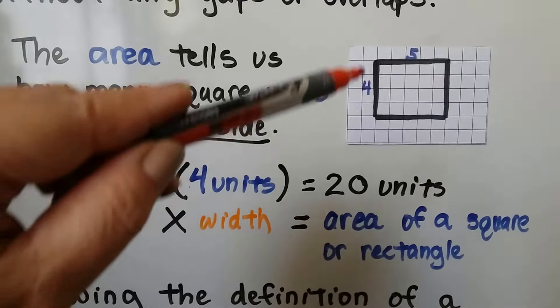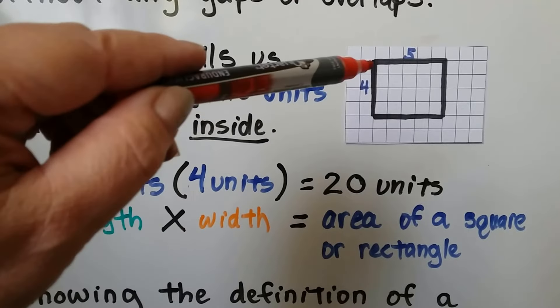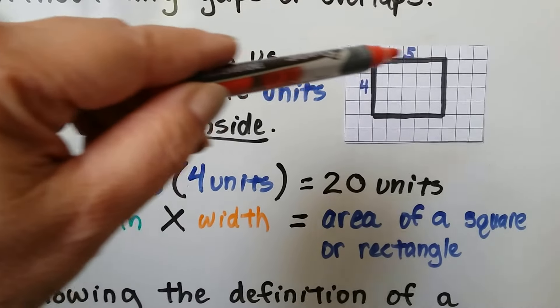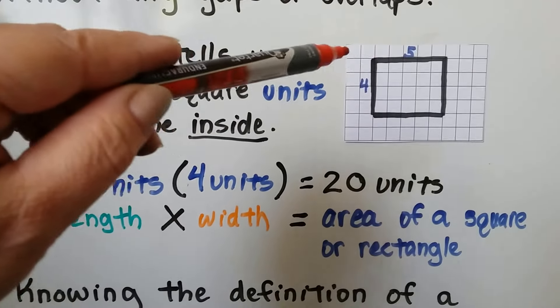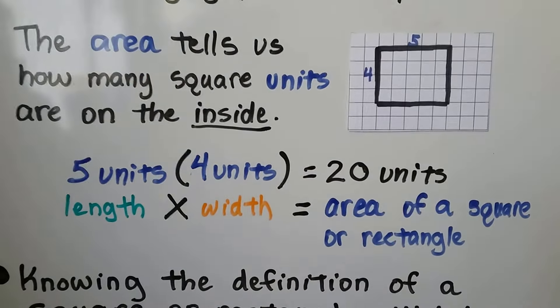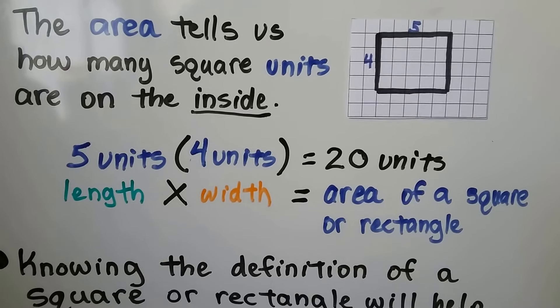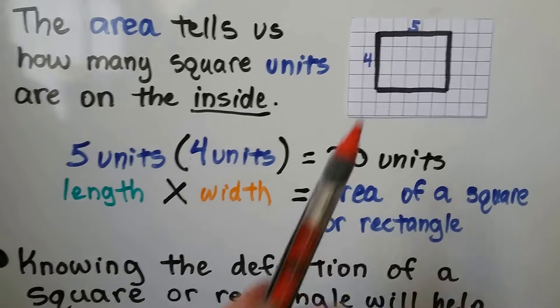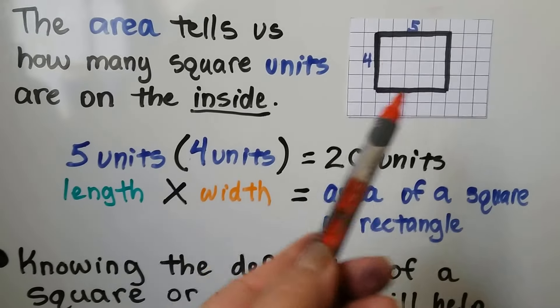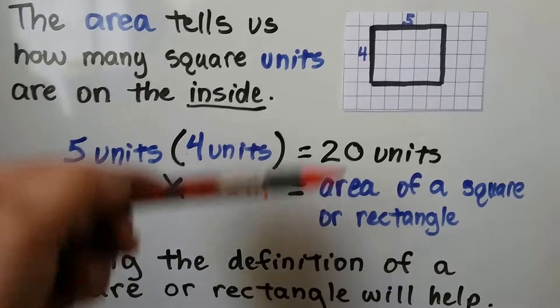If this side is 4 units long and this side is 5 units long, we would just do length times width — 4 times 5 — and that would tell us the inside. If we counted all of these inside squares, we'd get 20.